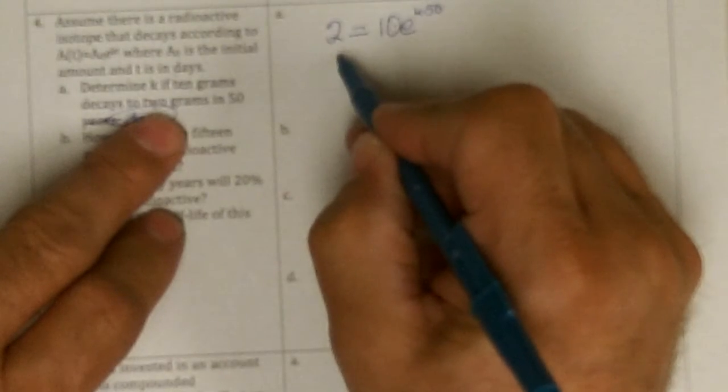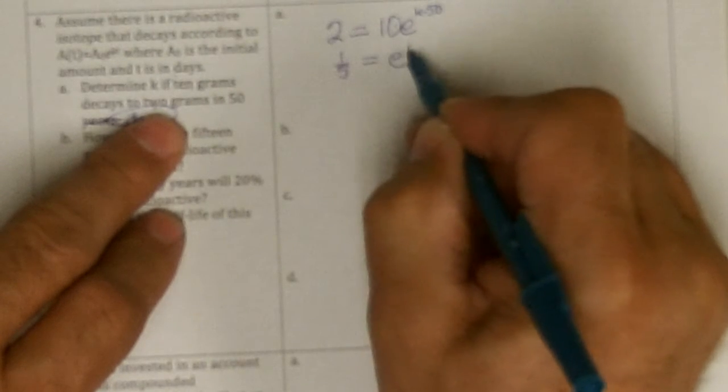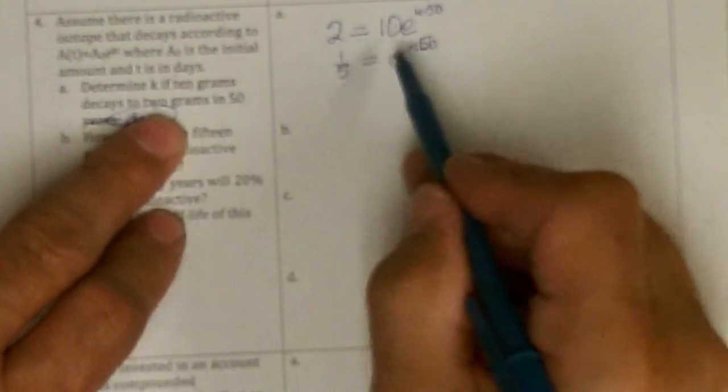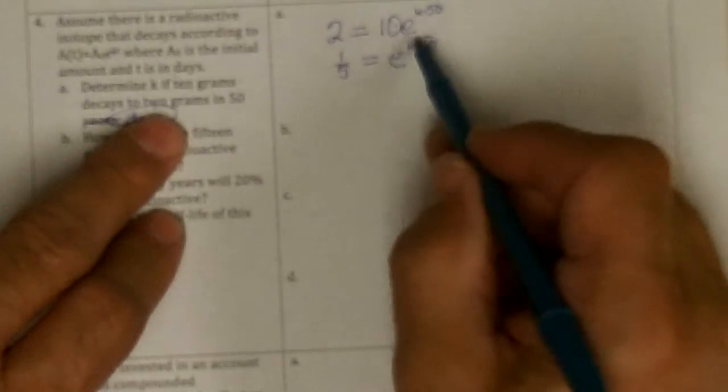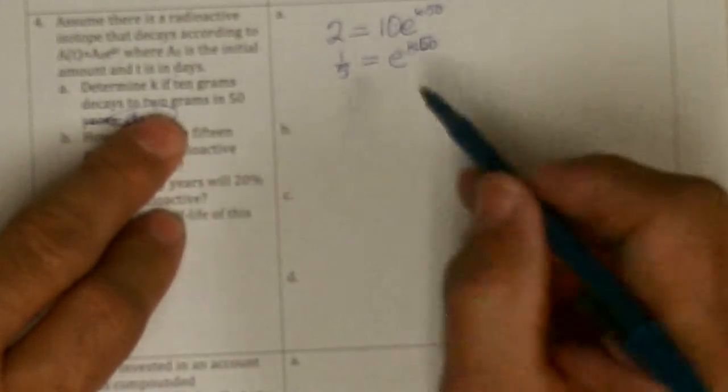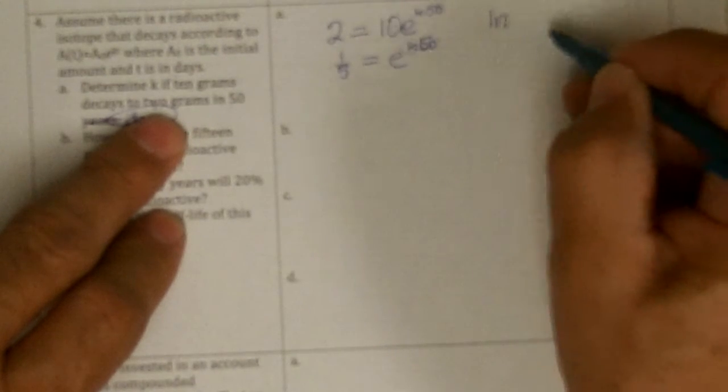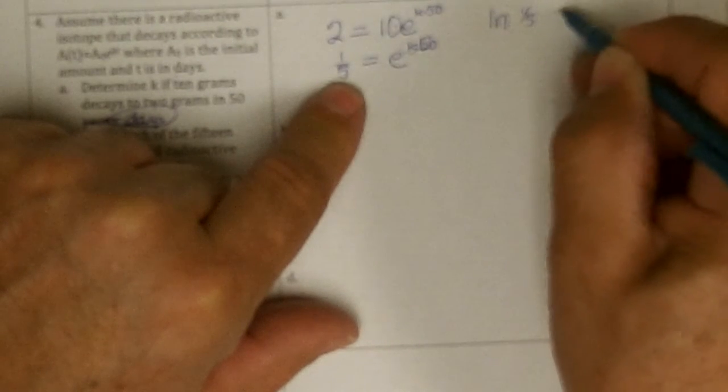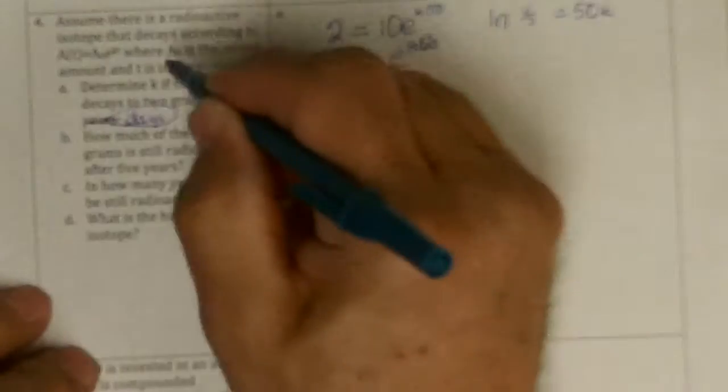If we divide both sides by 10, we get 1 fifth equals e to the k times 50, and we're trying to find this k for this particular isotope. So this is now exponential with the unknown in the exponent, so we change it to log, and this is base e, so it would be natural log. To what power do we take e to get 1 fifth, and that would be 50 days times the constant for this isotope.